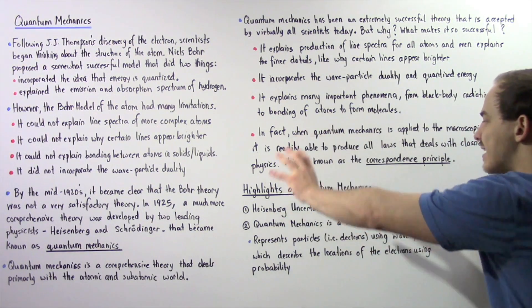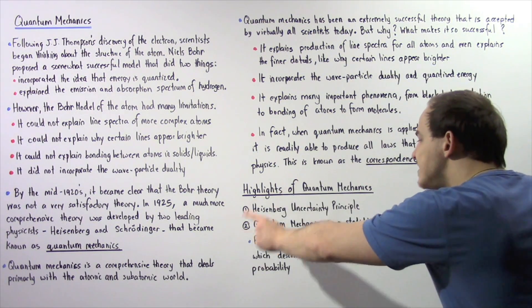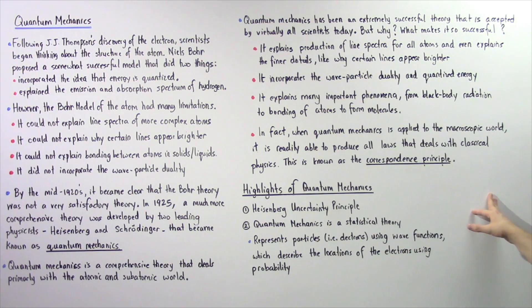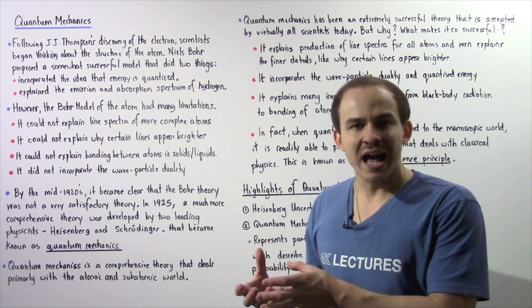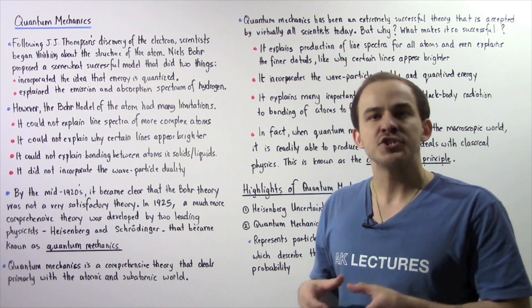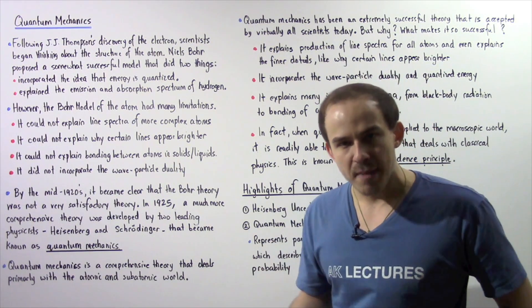Firstly, quantum mechanics incorporates a principle known as the Heisenberg uncertainty principle, which basically tells us that there is a limit to how precise a certain measurement of a certain quantity such as momentum or energy can be made.